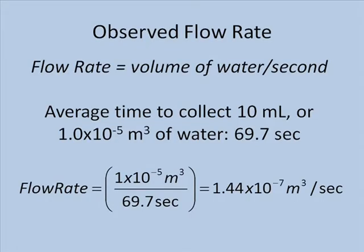Now let's calculate the observed flow rate. The flow rate is defined as the volume of water divided by the time interval necessary for that water to go through the tube. The average time to collect 10 milliliters, or using the official SI units of volume, 1.0 × 10⁻⁵ cubic meters of water,